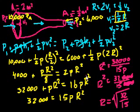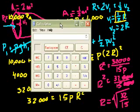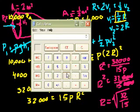That's going to be meters cubed per second. Let's see. Let me get my calculator. So I get 32 divided by 15 equals 2.1, and then I take the square root of that, 1.46.